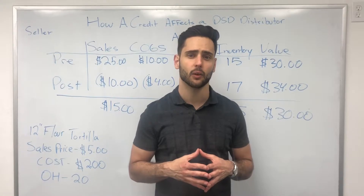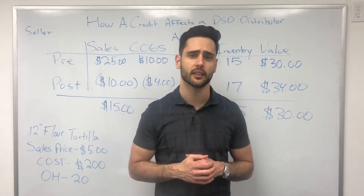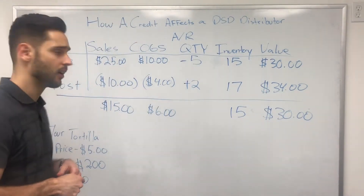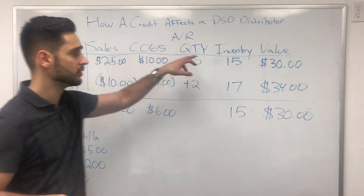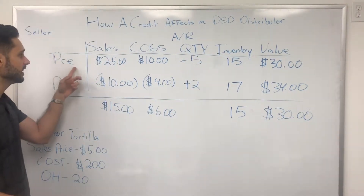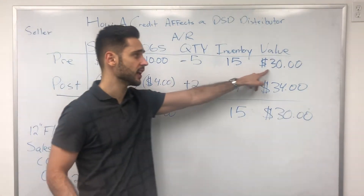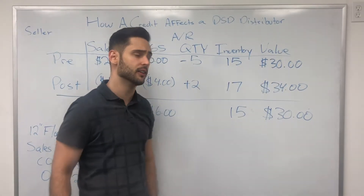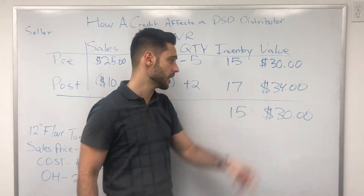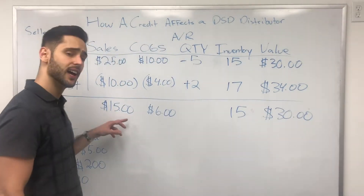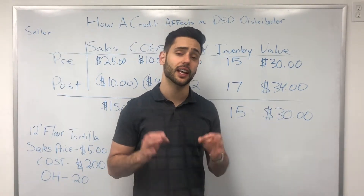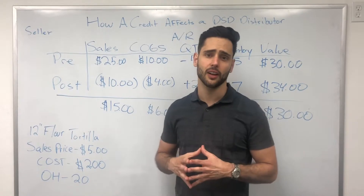Let me tell you what the effect is on a company like that when your credits are so high. On the board you're going to see a couple of components. I've got the different values that are going to be affected by the sale and by the credit. This is before the credit — what the accounting looks like when we make the invoice and the sale. And then we have the credit itself — what the accounting looks like when that credit gets made. Lastly, we have a net total.